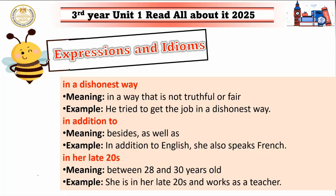'In her late twenties' means between the ages of twenty-eight and thirty years old — the final years of the twenties decade. You can also say 'in his late forties', 'in her late fifties', and so on. For example: she's in her late twenties and works as a teacher.